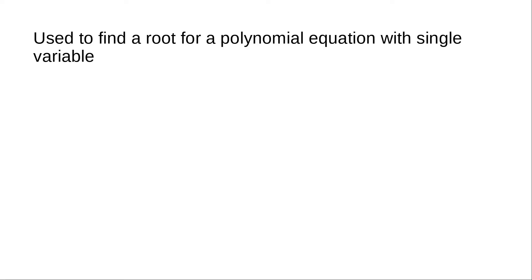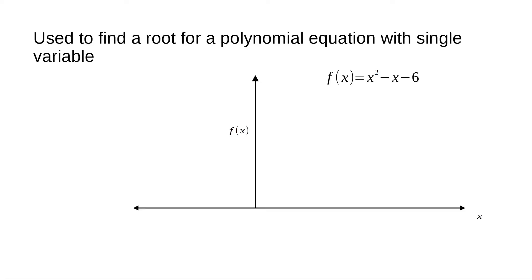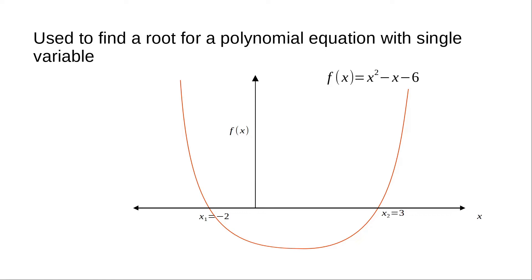We are working with a single variable. Let's take an example: f(x) = x² - x - 6. If we draw this polynomial, it's a quadratic equation, and it has its roots at x = -2 and x = 3.